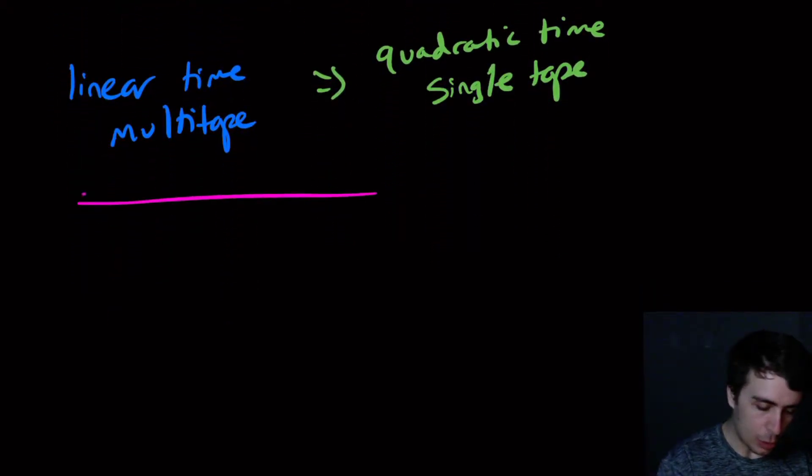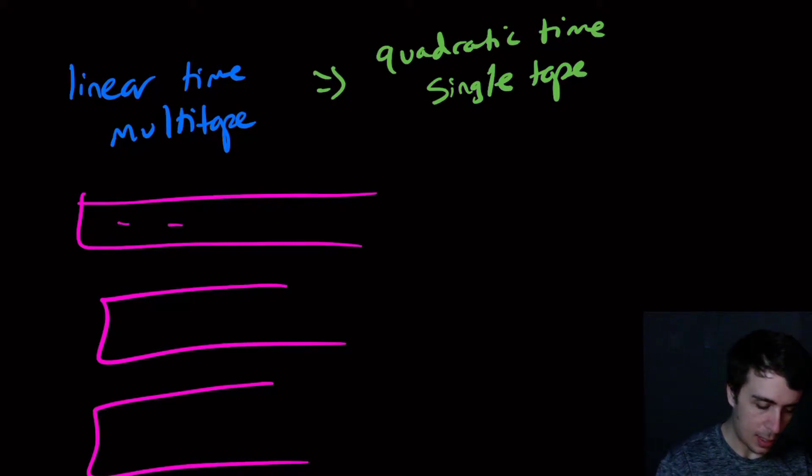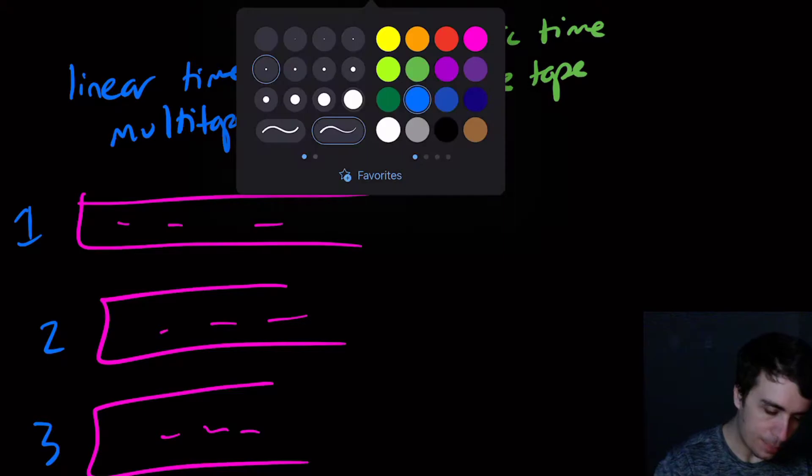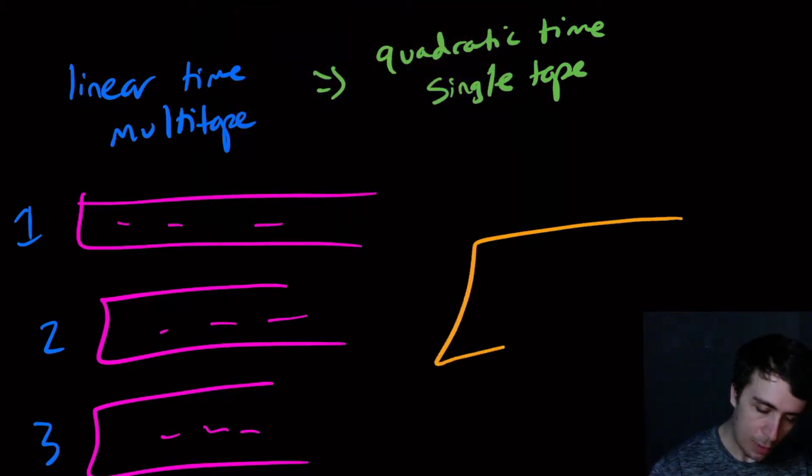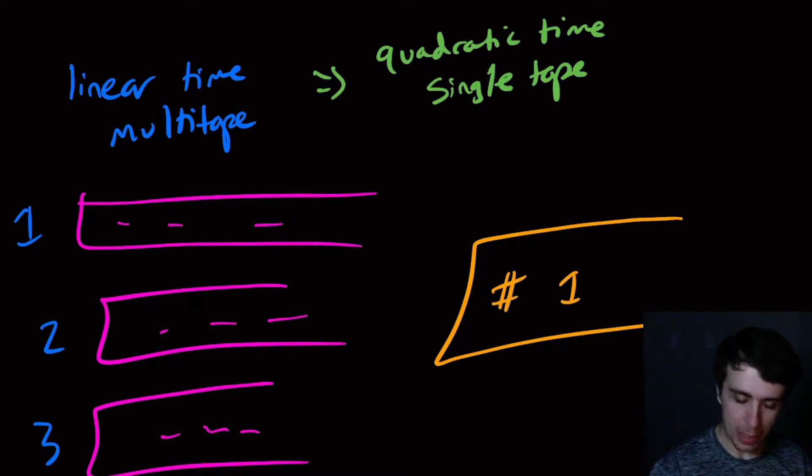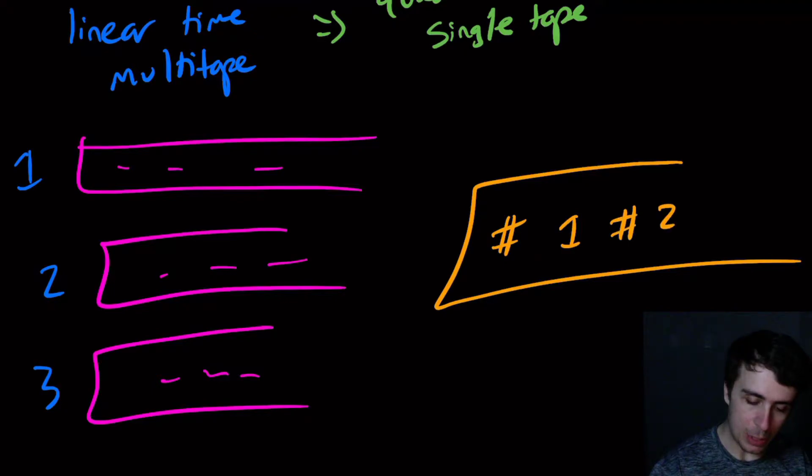So we had these multiple tapes, let's say that there are three tapes and there are maybe a bunch of contents on them. And let's say that we had tape one here, then tape two, tape three. Then how we converted it was we had the contents of tape one right here, separated between pound signs, and then tape two's contents, and then tape three's contents.